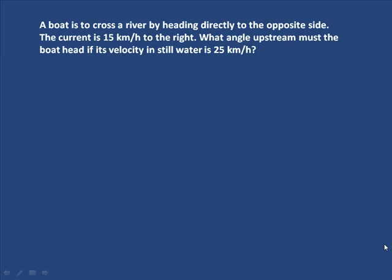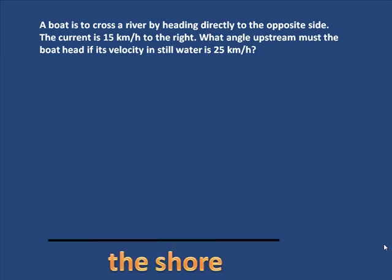So here's our next problem. A boat is to cross a river by heading directly to the opposite side, and the current is 15 kilometers per hour to the right. What angle must the boat head?